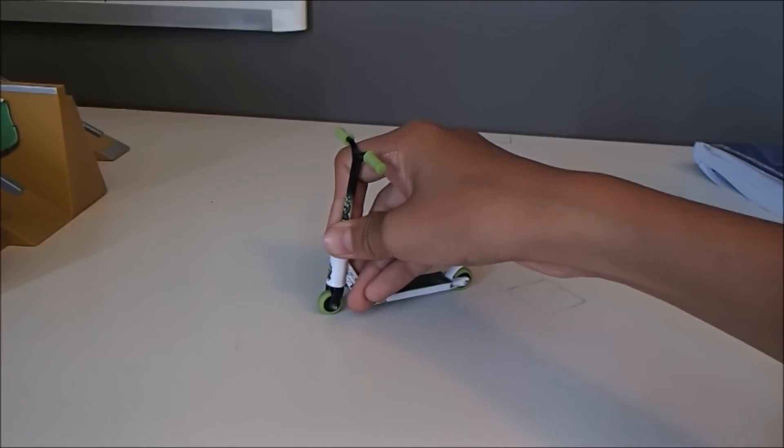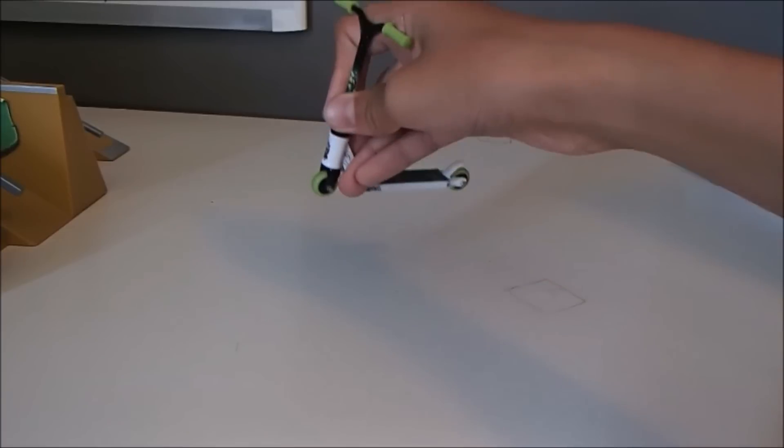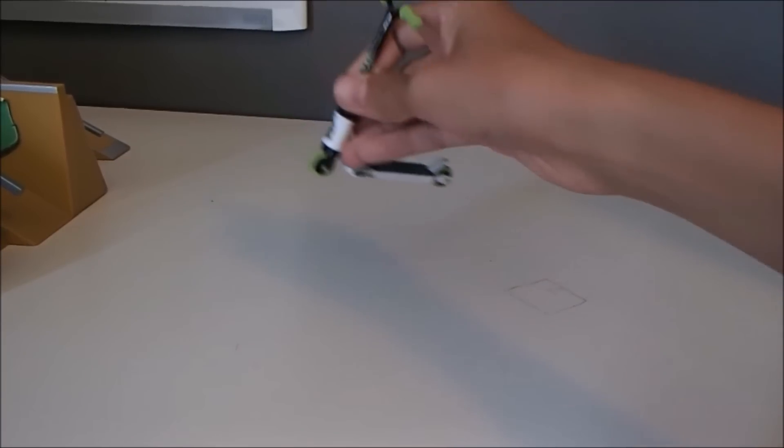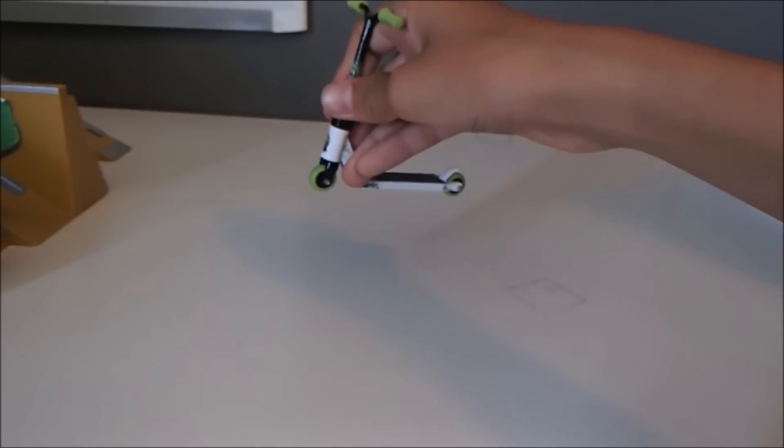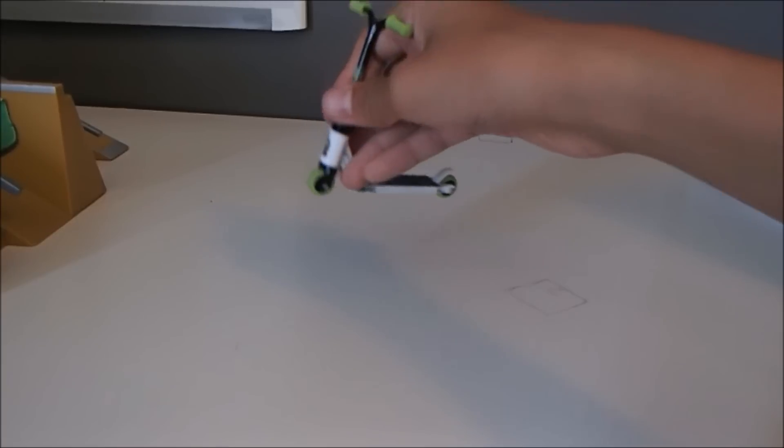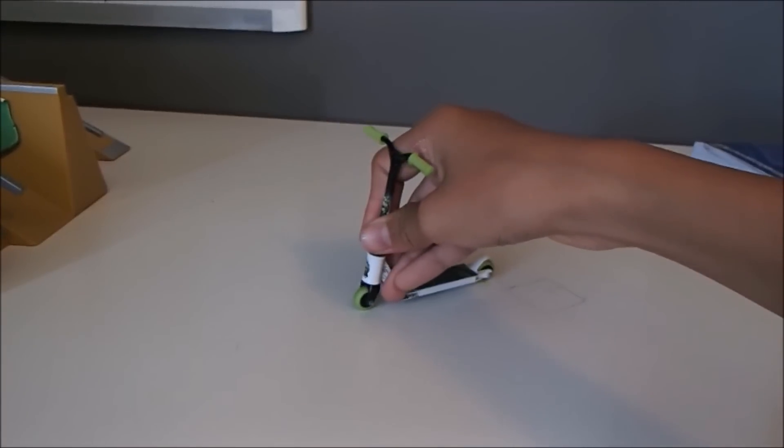Okay, so to do a tail whip to heel whip, what you want to do is start off with a bunny hop, then do a tail whip. But before you catch the tail whip, you want to flick it around the other way - so a heel whip with your other finger - and then land it. So this is how it should look like.